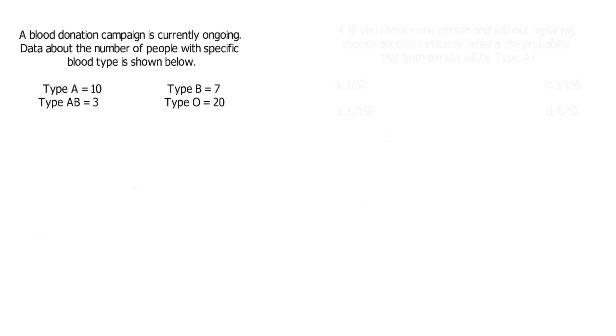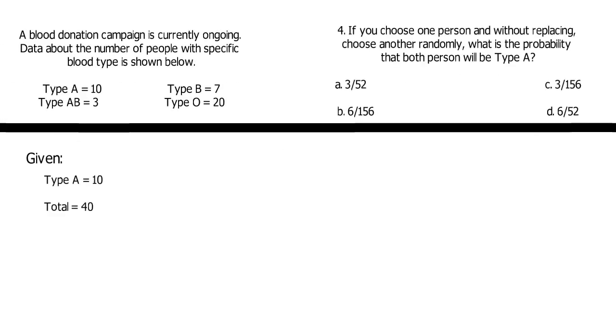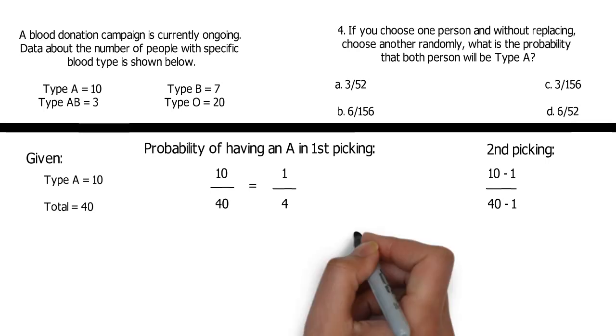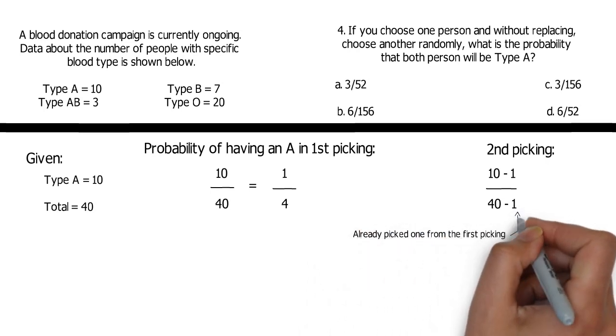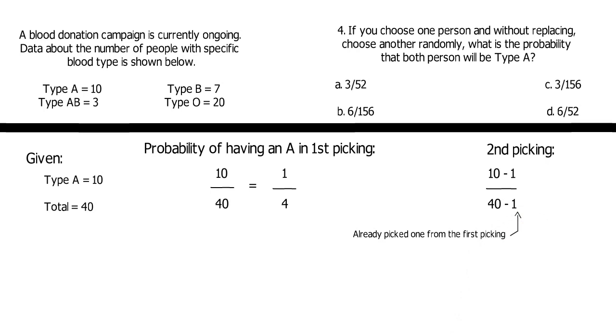The fourth question is little more complicated. First step is to get the probability of getting an A, so 10 over 40, or 1 fourth. We need a pair of type A, so another picking will be done. Because we already choose one type A, we should remove one to the second iteration along with the total. So, we have 9 type A over 39 total persons.